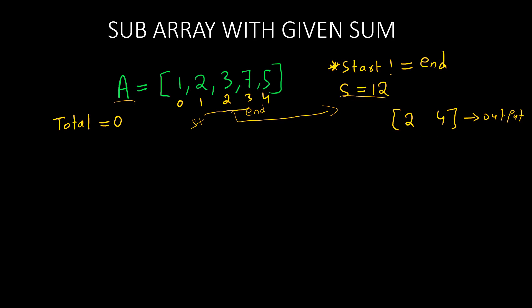Now let's do a dry run so we can understand how the starting point and ending point are decided in the code. For that, we take total equal to zero and iterate over the array A. We keep adding elements until total is smaller than or equal to S. When total equals S, we stop the loop and return the starting and ending indexes, adding one to get the position values. If total is greater than S, we start removing from the starting point using the start variable, initialized to zero.